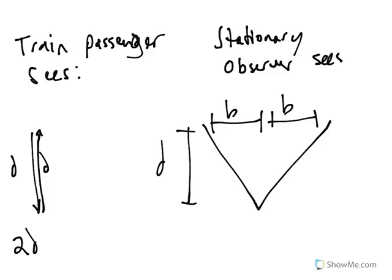So again, on the left, the passenger sees that the ball has traveled 2D, whereas a stationary observer sees that the ball has traveled the diagonal distance here, which by the Pythagorean theorem is given by 2 times the square root of D² plus B².